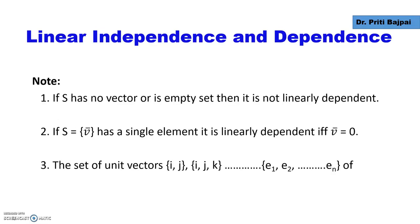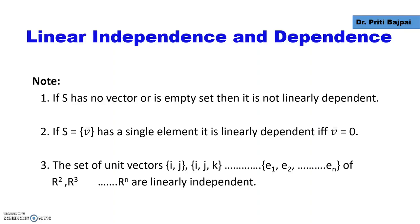A few things we should remember: if S has no vector, i.e., it is an empty set, then it is not linearly dependent — it will be called independent. If S has a single element, say vector v, then it will be linearly dependent if and only if that vector is the zero vector. Third, all unit vectors such as i, j from R2, i, j, k from R3, and e1, e2, ..., en from Rn are all linearly independent.